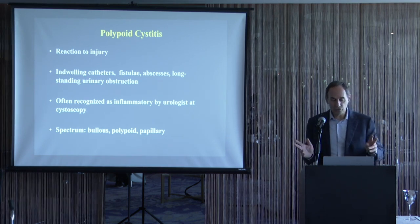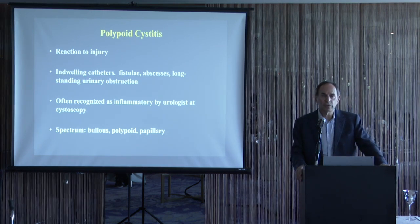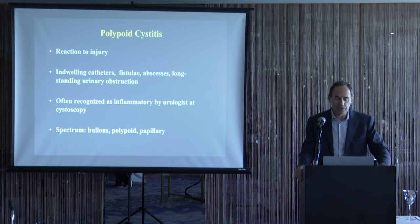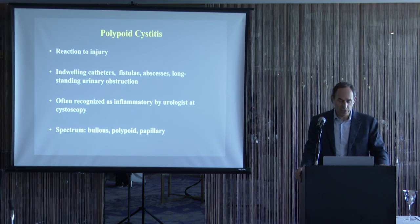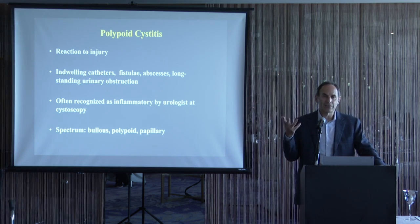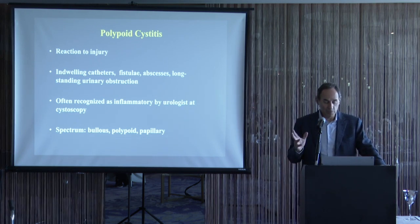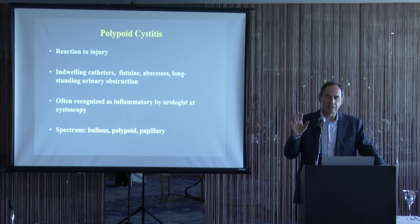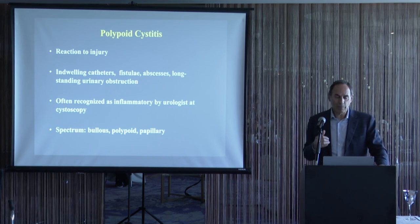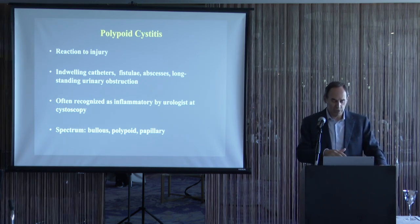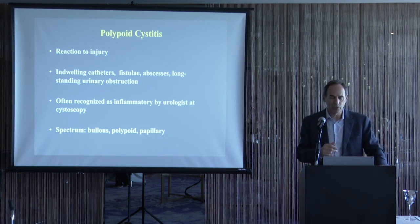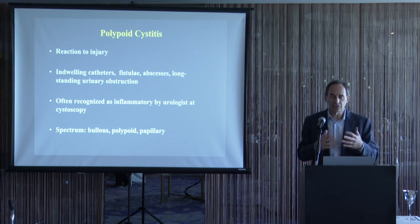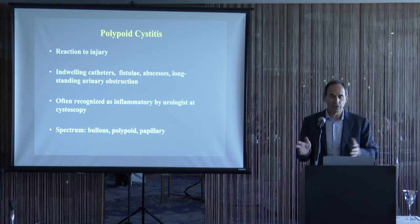Histologically, polypoid cystitis spans a spectrum from bullous cystitis (extremely dilated, edematous fronds) to polypoid cystitis to papillary cystitis (edema replaced by fibrosis). In pathology reports, these are all called polypoid cystitis. When uncertain whether something is polypoid cystitis or a papillary urothelial neoplasm, always contact the urologist or review the cystoscopy report.